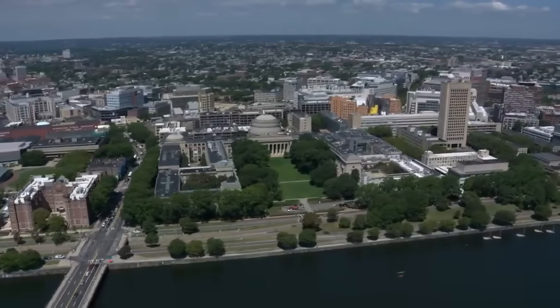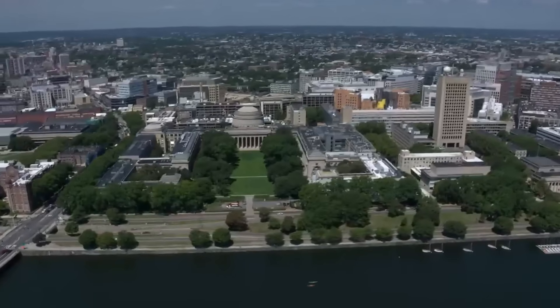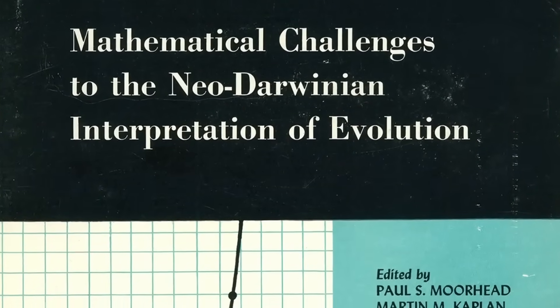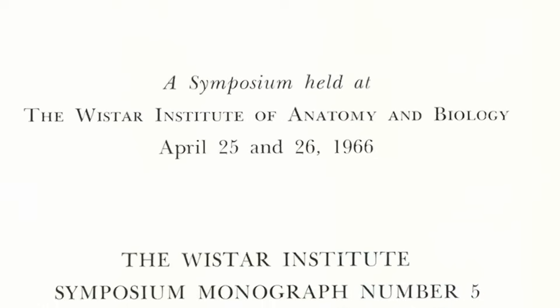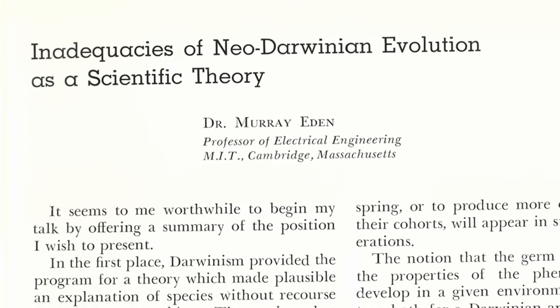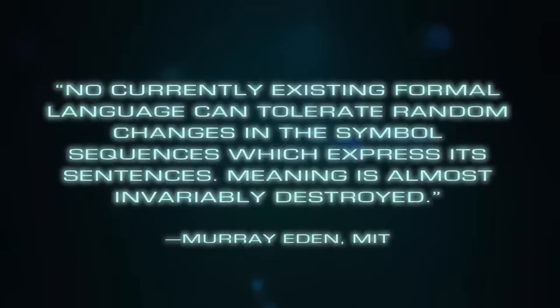We know from computer code that if you start making random changes to a section of computer code, you're much more likely to degrade the information that's there already than to come up with a new operating system or program. This problem has long been recognized by computer scientists, mathematicians, and engineers, including a group from MIT who convened a now famous conference at the Wistar Institute in Philadelphia in 1966. These scientists met to consider whether the random mutation natural selection mechanism could conceivably generate enough biological information to build a new animal or even a new protein in the time available to the evolutionary process. One of these scientists was MIT engineering professor Murray Eden, who stated: 'No currently existing formal language can tolerate random changes in the symbol sequences which express its sentences. Meaning is almost invariably destroyed.'